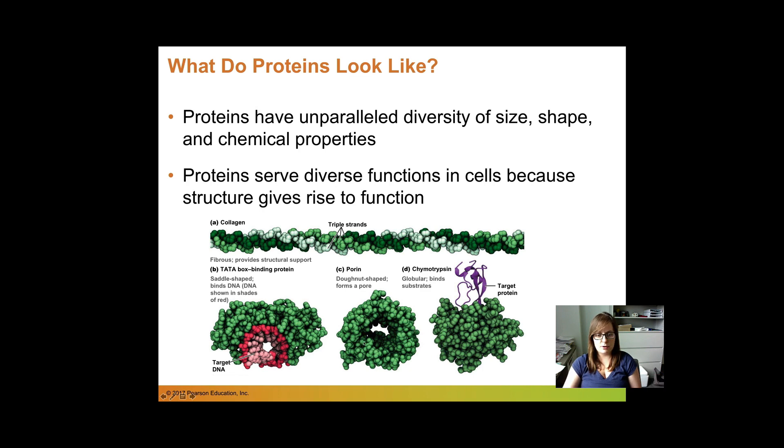This is porin. It has a donut shape so it can create a pore that things can go through. And then we have this globular protein that its shape doesn't really tell us a lot about what it does. So these ones are a little bit harder to predict what the function is by just looking at the shape.